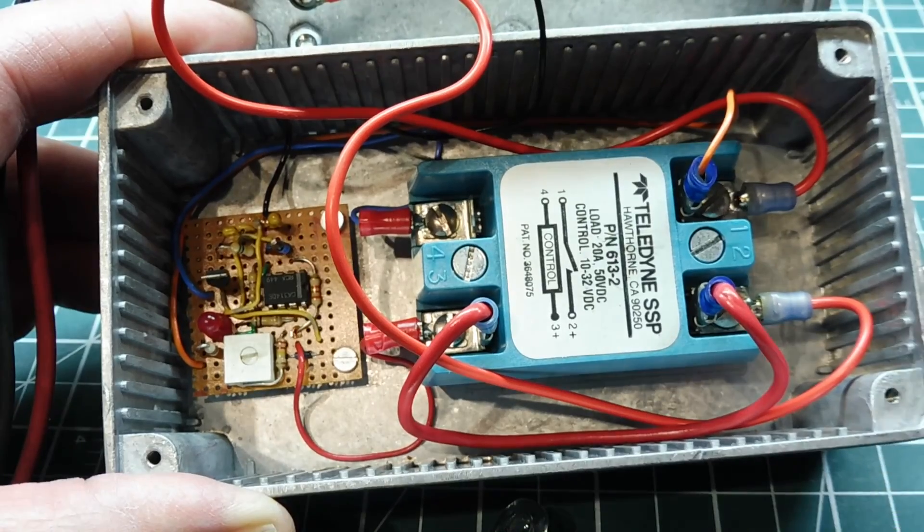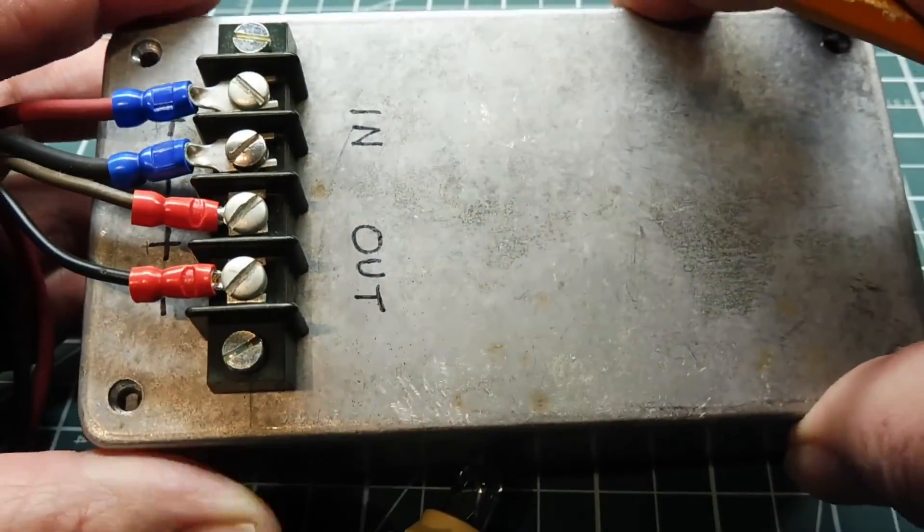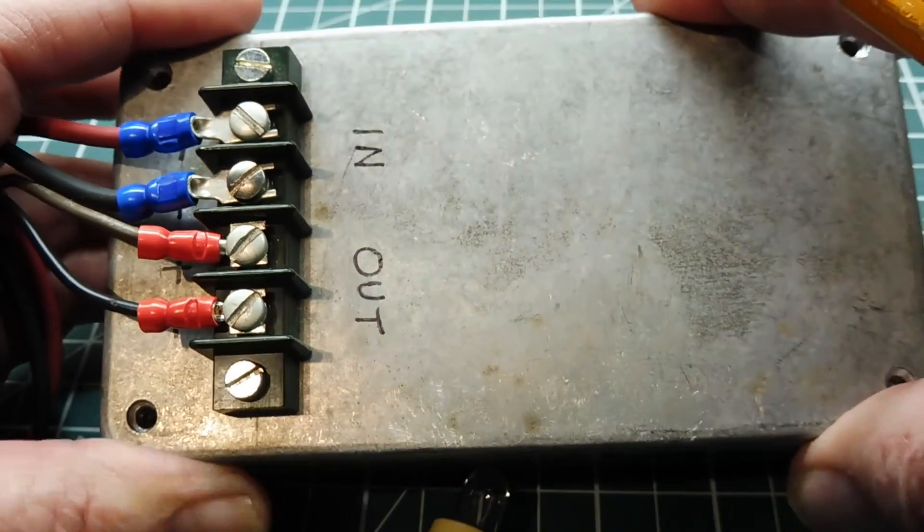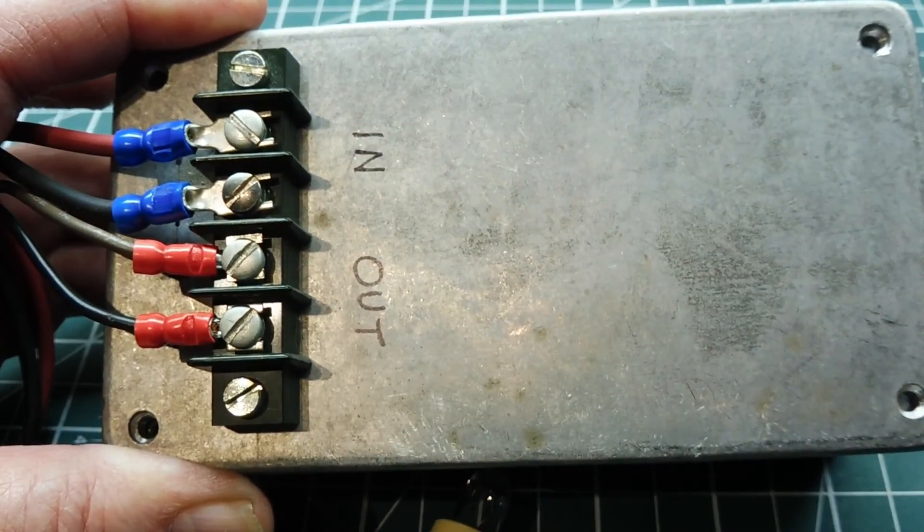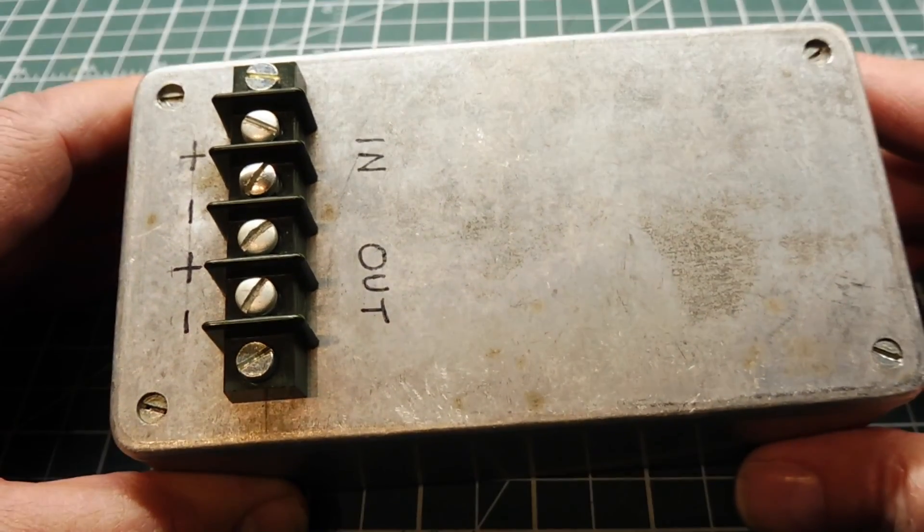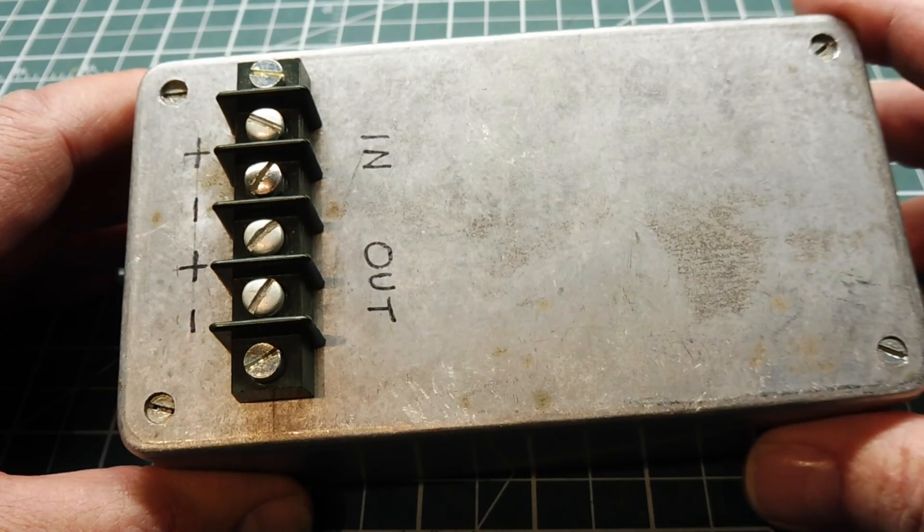So that's the circuit there. It's very simple, and it all mounts into this enclosure that we can set up. Then we can control the load for a low voltage cut-out. Okay, so that's my low voltage cut-out box. Now I've built a few of these.